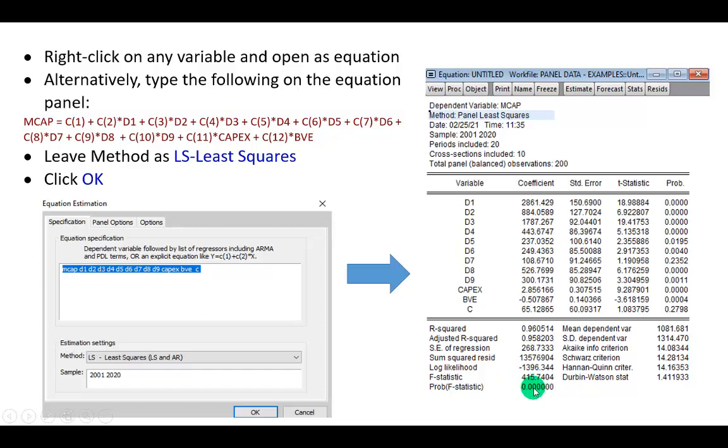And next we find looking at R squared, which is the coefficient of determination, that about 96% of the variation in market capitalization is explained by this regression, which is more than was the case in the pooled OLS regression where we had only 74%. So already we can see that fixed effects model gives a better fit.